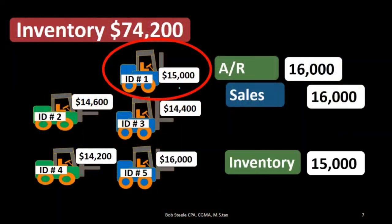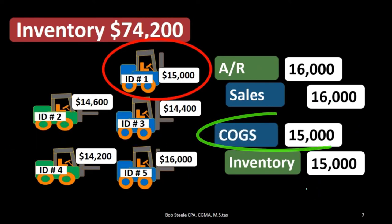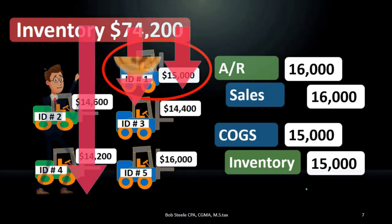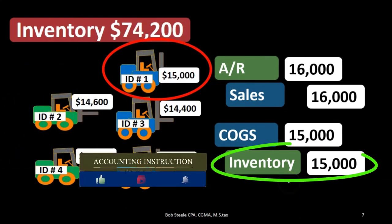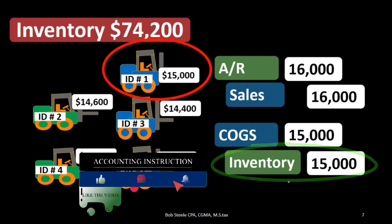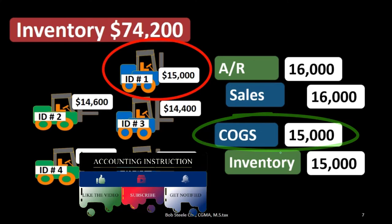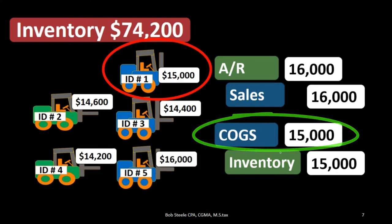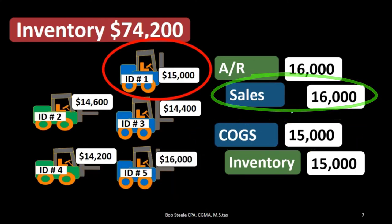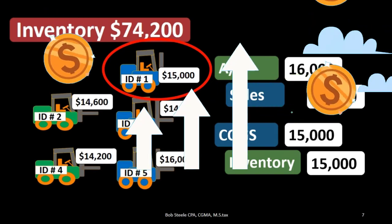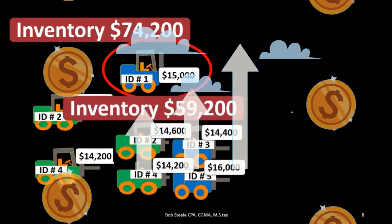Where our tracking comes into play is determining how much inventory goes down by. Inventory goes down by the $15,000 cost, and the related cost of goods sold goes up by $15,000, bringing net income down. Sales on the income statement go up by $16,000, so there is a net gain of $1,000 net income effect in that case.